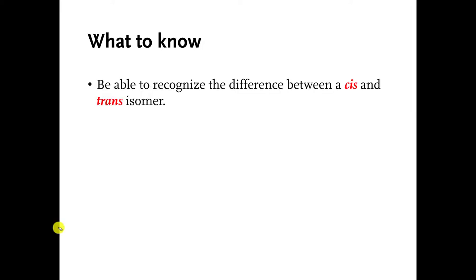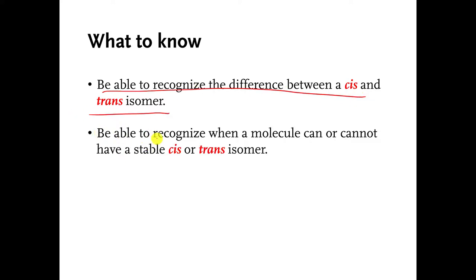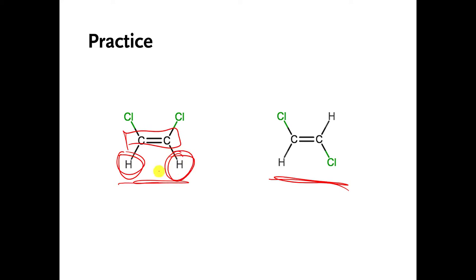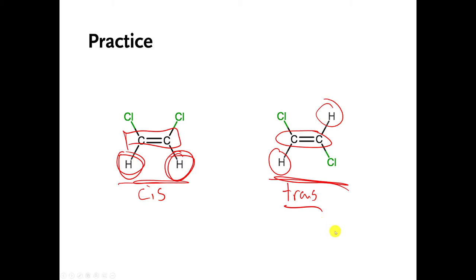What I want you to know is: be able to recognize the difference between a cis and a trans isomer, and be able to look at cis and trans isomers and figure out which is which. You can pause the video and look at these and figure out which one is the cis isomer and which one is the trans. This one has a carbon-carbon double bond with hydrogens pointing in the same direction — that's the cis isomer. This one has a carbon-carbon double bond with hydrogens pointing in opposite directions — that's the trans isomer. That is the end of the video on cis and trans isomers. See you in the next one.